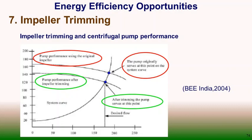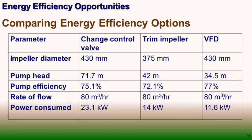Comparing three options to improve energy efficiency: changing the control valve, trimming the impeller, or adopting a variable frequency drive (VFD). VFD clearly reduces power the most but has the highest cost. Changing control valves should always be avoided — it reduces flow but does not reduce power consumption and increases maintenance cost. We must judiciously utilize services and go for better control arrangements.